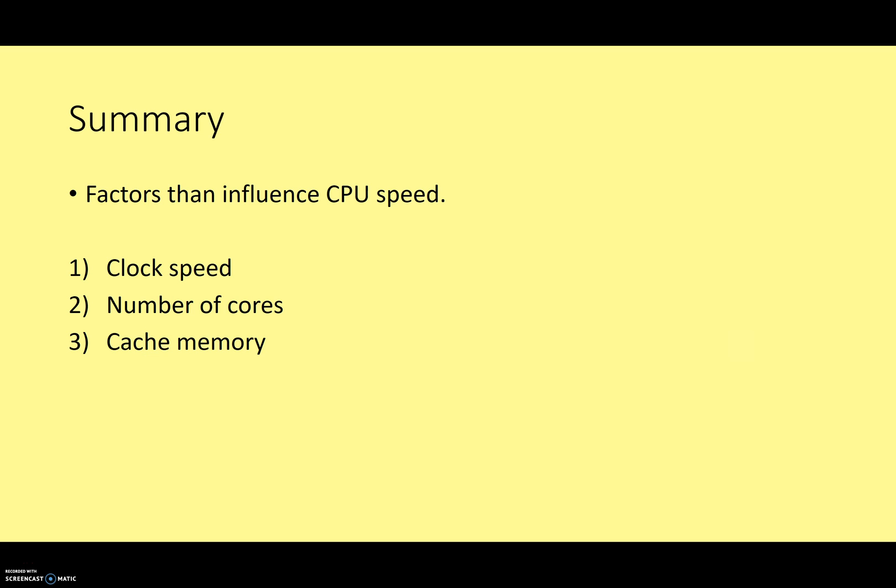So in summary, we have three factors that influence your CPU speed. We've got the clock speed, we've got the number of cores, and we've got the cache memory. Plus, we have various other factors. But really, as long as you know about clock speed, number of cores, and cache memory, and you can describe how that influences speed, you'll do really well in your exam. Thank you very much for your time. Go enjoy your quiz questions. See you in class.